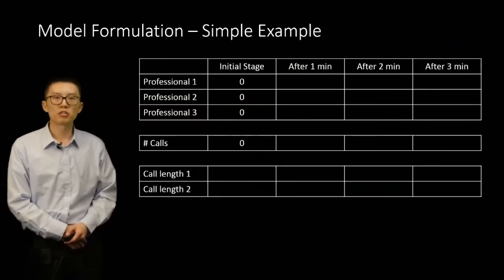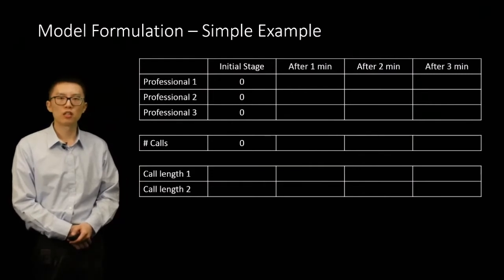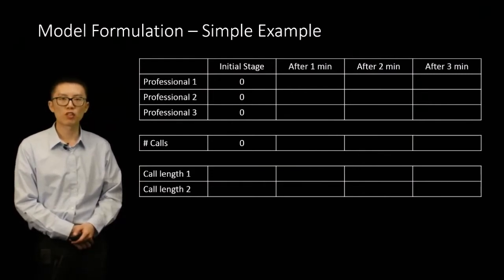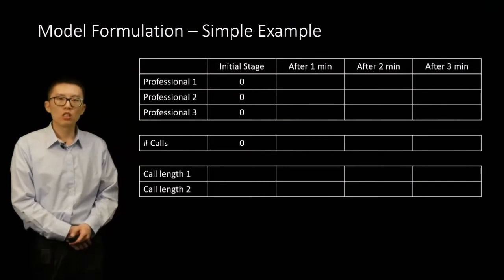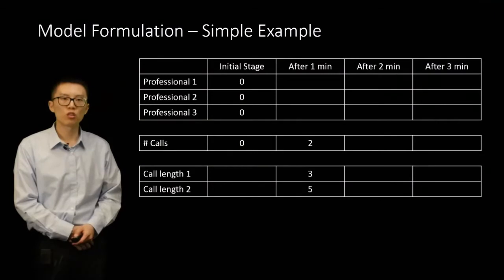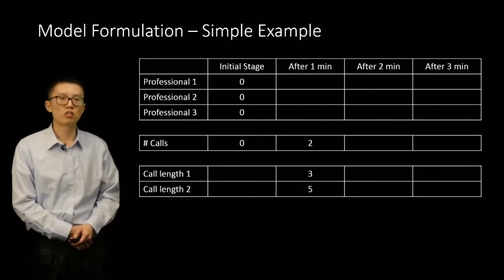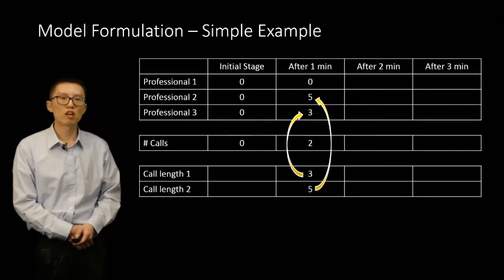Now let's look at a simple example: a small call center with only three call professionals or agents. The first table shows the agents' status. Zero here means there are zero minutes left for the call professional to be free. The second table is the number of calls received within each minute. At the very beginning, we assume we don't have any calls and all agents are free. After one minute, we receive two calls — this two coming from the Poisson distribution. One call is going to take three minutes and another is going to take five minutes; three and five come from the log-normal distribution. We then randomly assign these two calls to two call professionals: the second call professional takes the five-minute call, and the third takes the three-minute call.